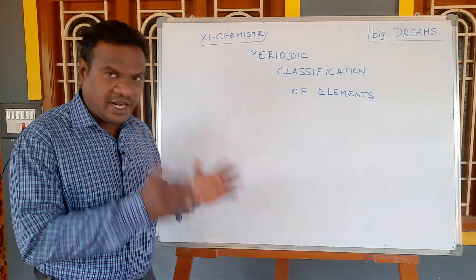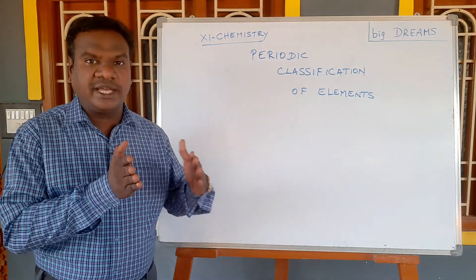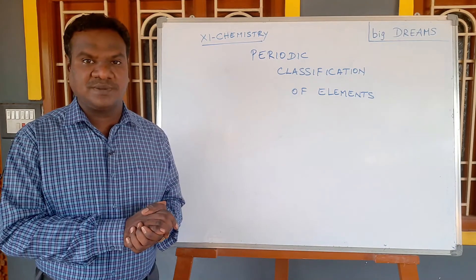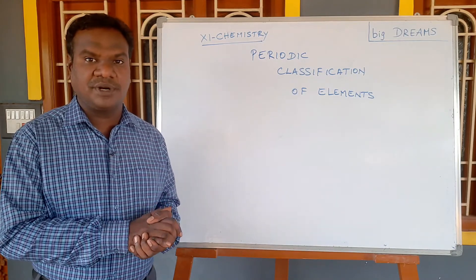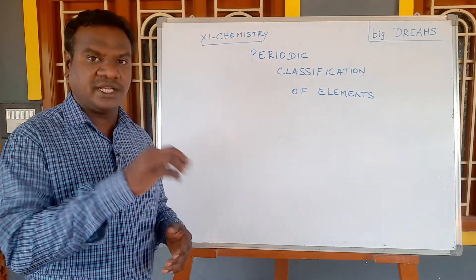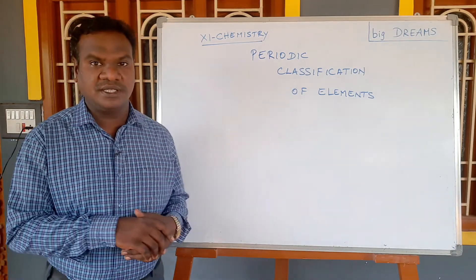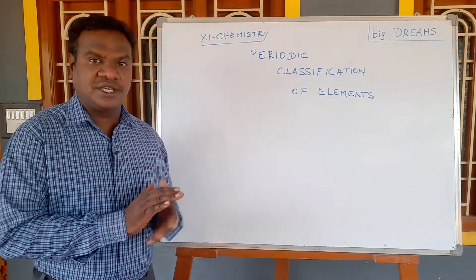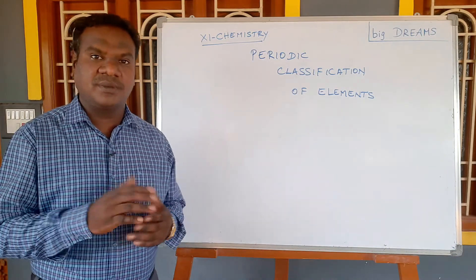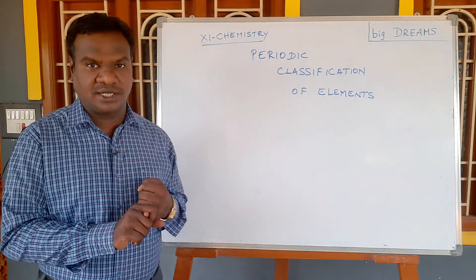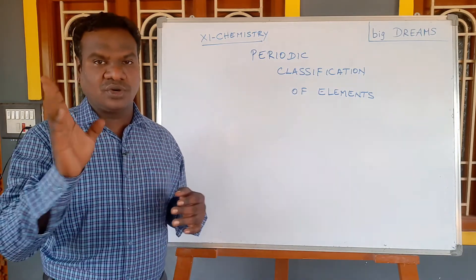Every element has a unique character. Based on those properties, elements are arranged and classified. Earlier classification of elements began with Lavoisier's table, which had four categories of substances.